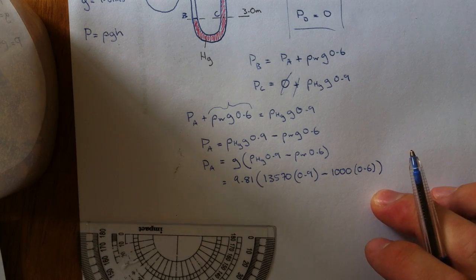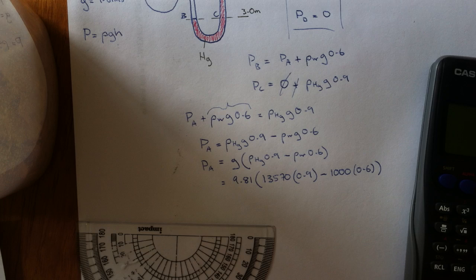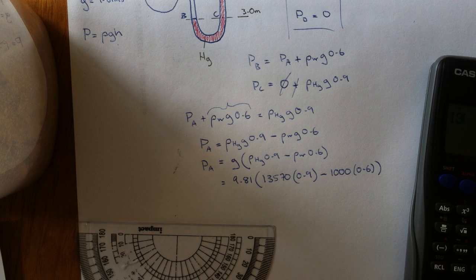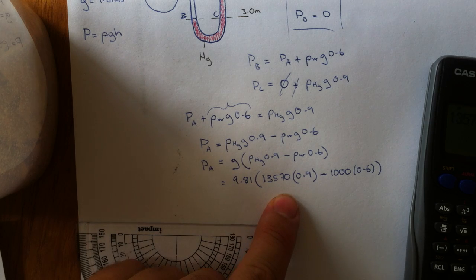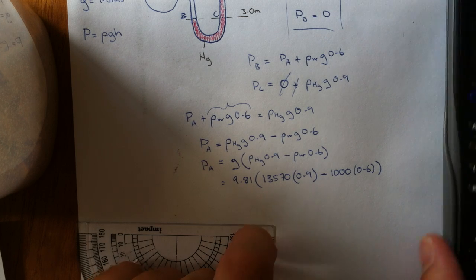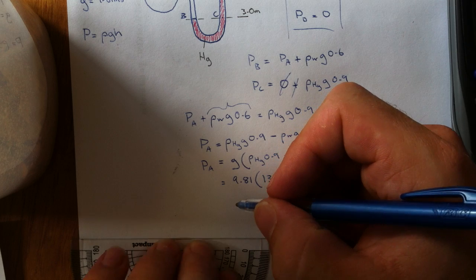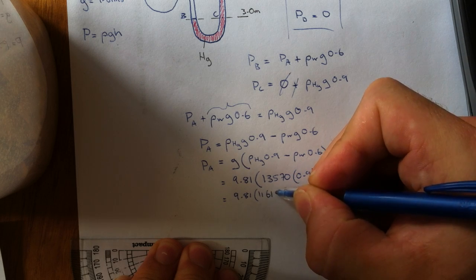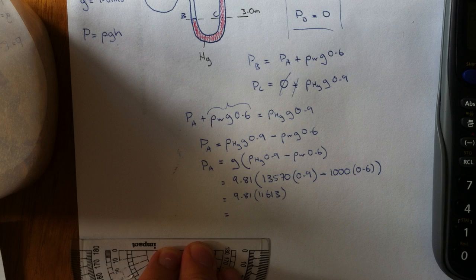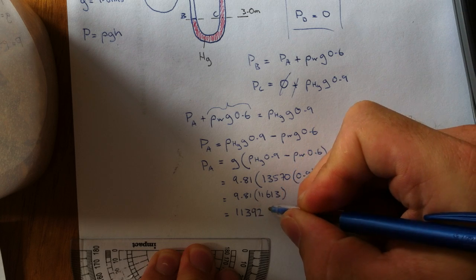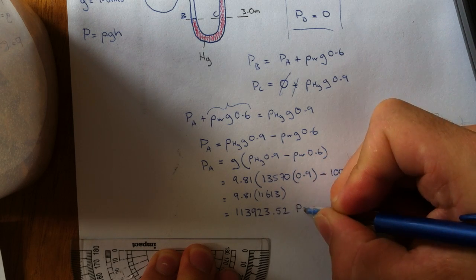And at about this point we can whip the calculator out and solve this thing. So 13,570 times 0.9 minus 1000 times 0.6 is 11,613. So 9.81 times 11,613 which equals 113,923.52 pascals.